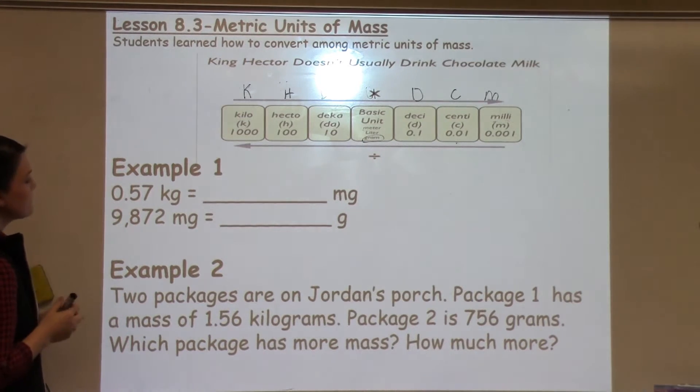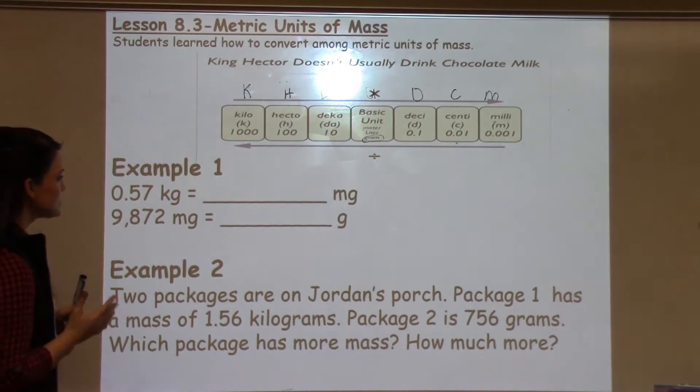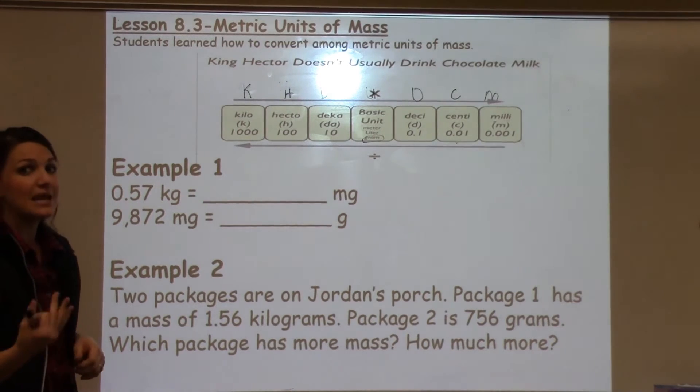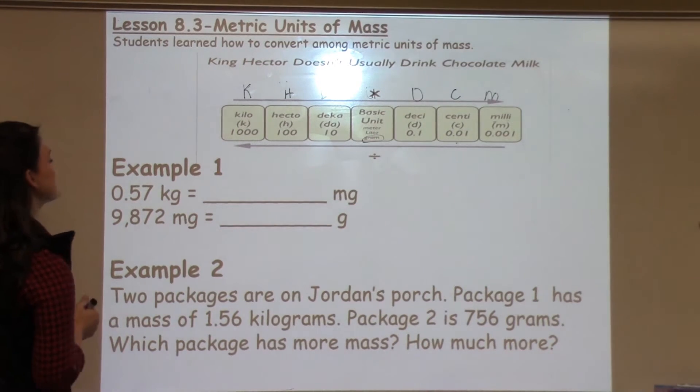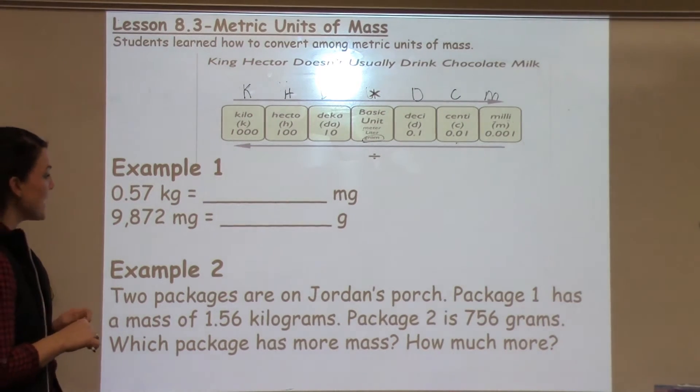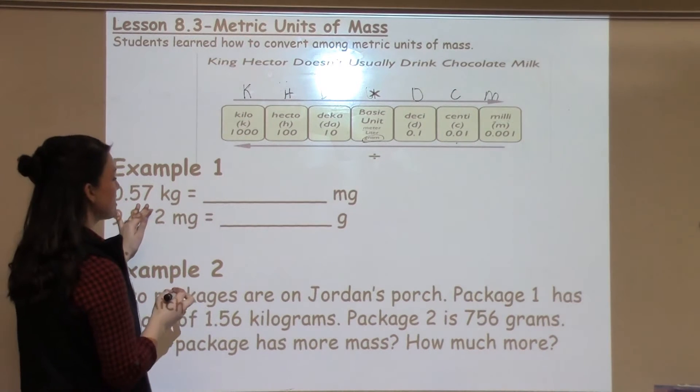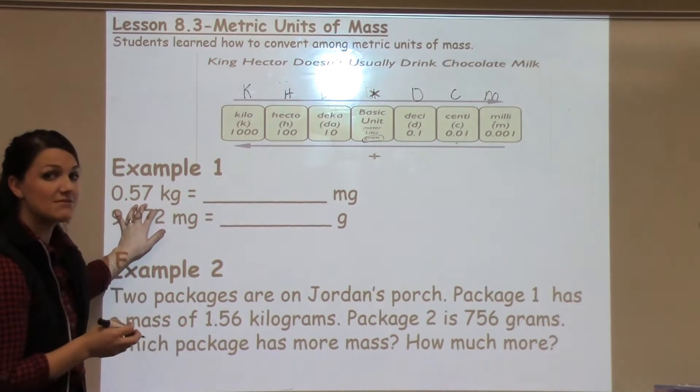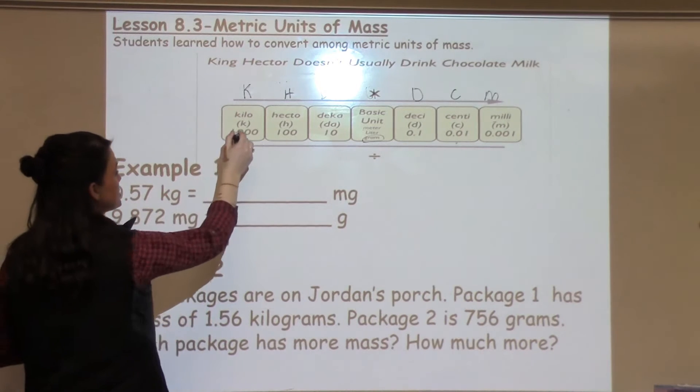So let's look at the first example. The first example says 0.57 kilograms equals how many milligrams? So the strategy that we've always used, or we've been practicing, has been to start with what you have a number for. And in this case, I have a number for kilograms, so I'm going to start there.